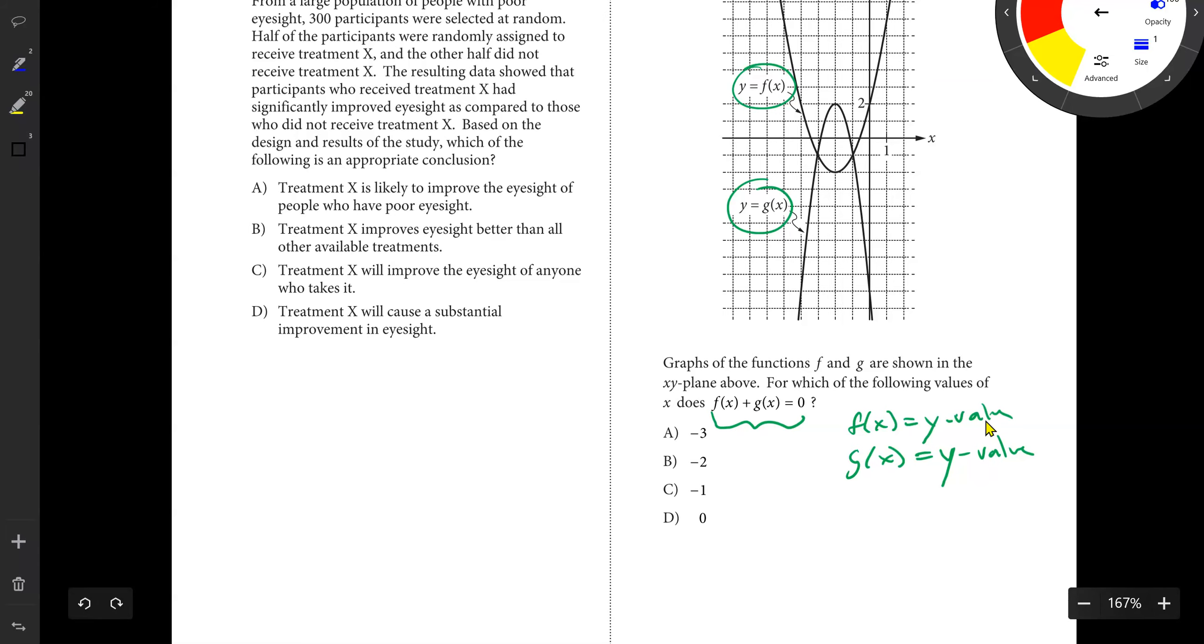When does this equal zero? That would be when F of X and G of X are opposites of the same value. For example, 5 and negative 5, 7 and negative 7, 10 and negative 10. If I do 10 plus negative 10, I get zero. So where does that happen?